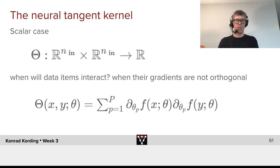...which is a function from input space times input space into R. So, when should data points interact? Well, if their gradients are not orthogonal to one another.